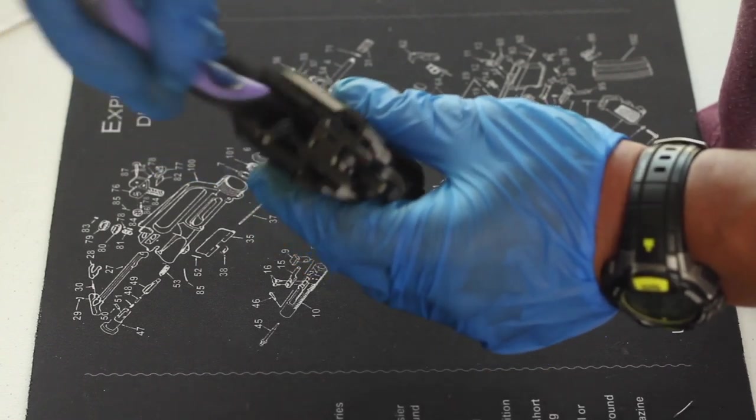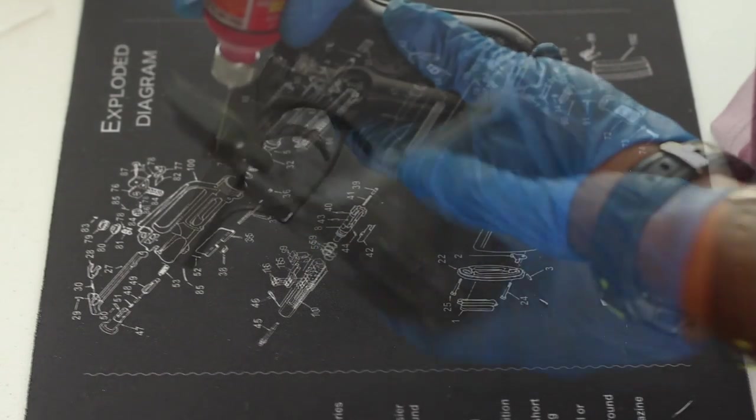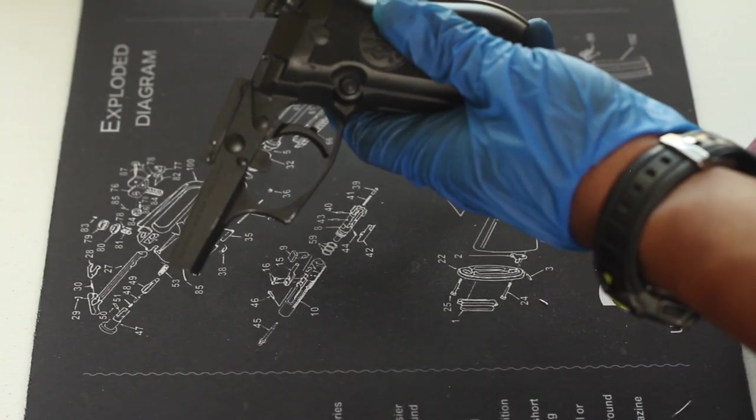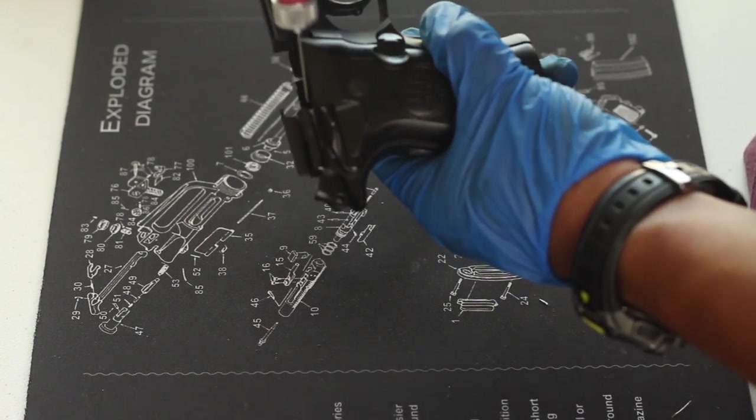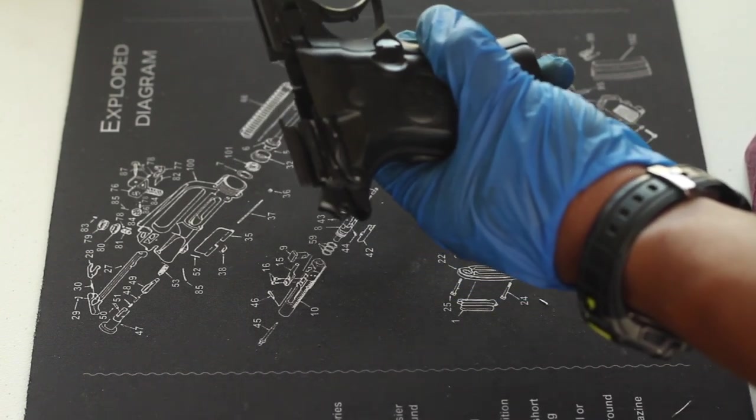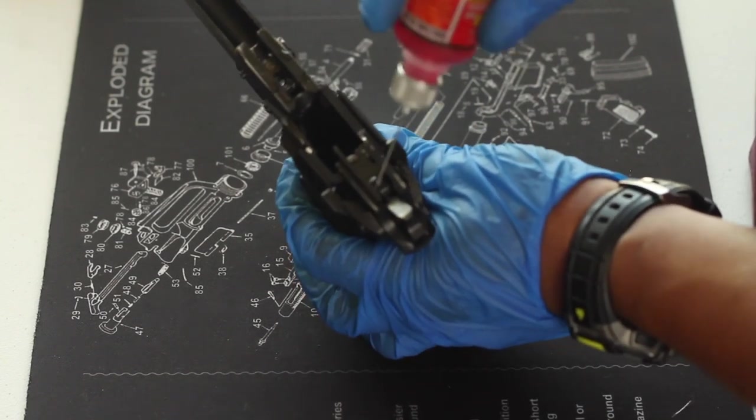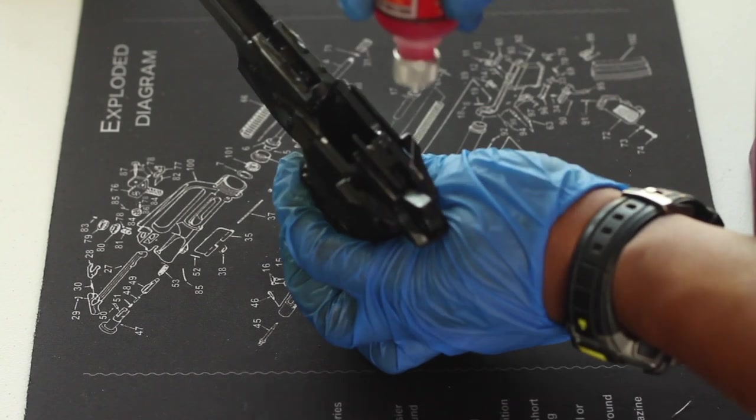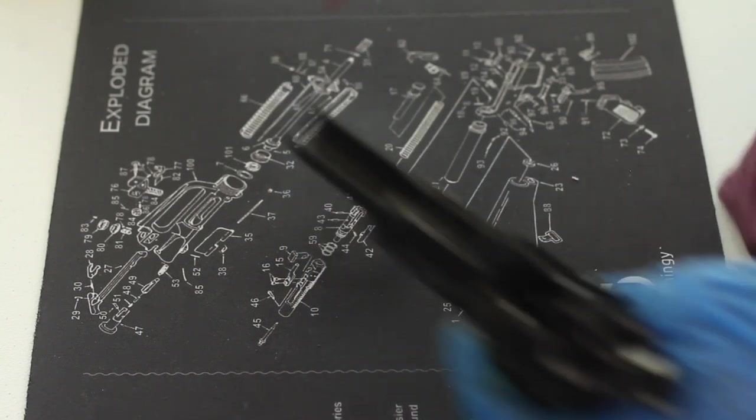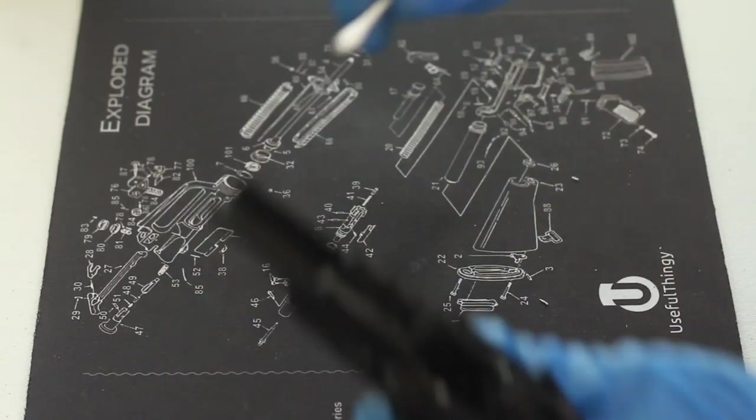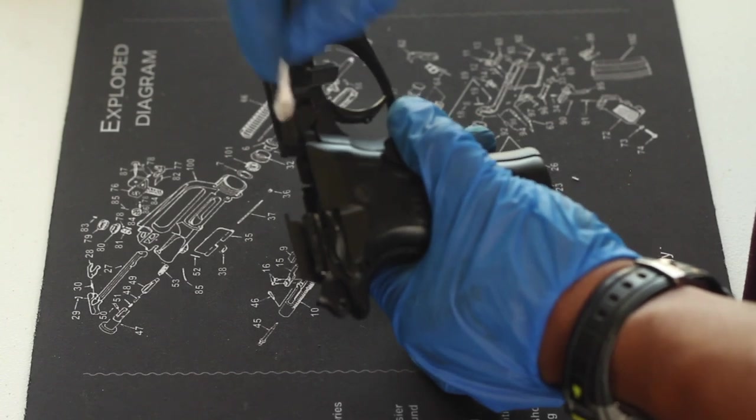When you're done with the cleaner, spray CLP or lube all over the frame and wipe it off with a clean rag. Now before reassembly, make sure you lube your rails and all parts that show metal-on-metal wear. I like to use a needle applicator just for precision. To keep excess lube from running off the gun, I use a Q-tip to smooth out the lubricant.